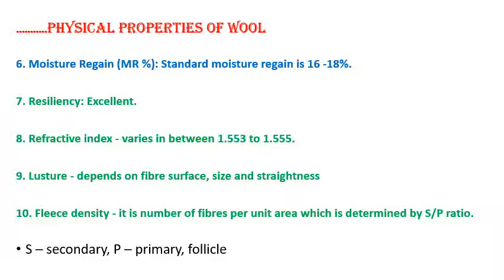Number nine is luster, which depends on the fiber surface, size, and straightness, giving a glazed look to the fiber. Number ten is fleece density — the number of fibers per unit area on the skin, determined by the SP ratio. In very high quality breeds like Merino, this fleece density is very high.